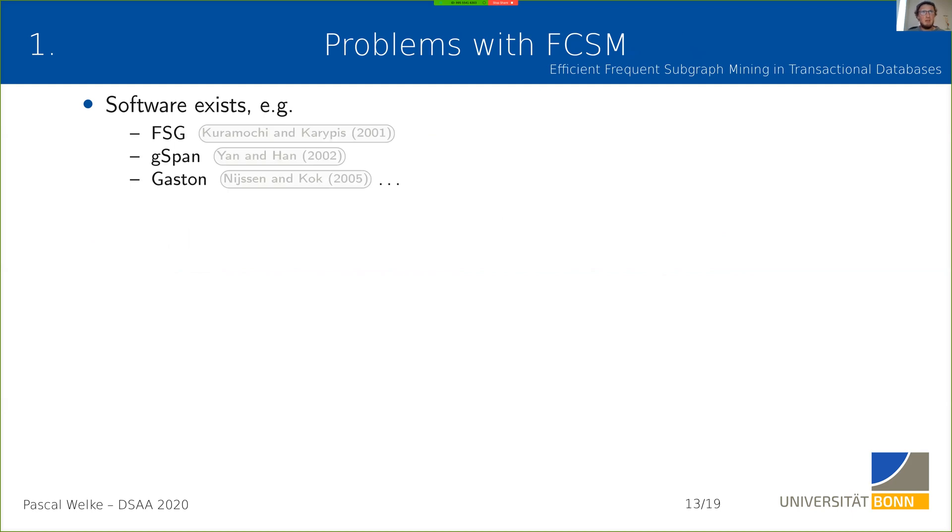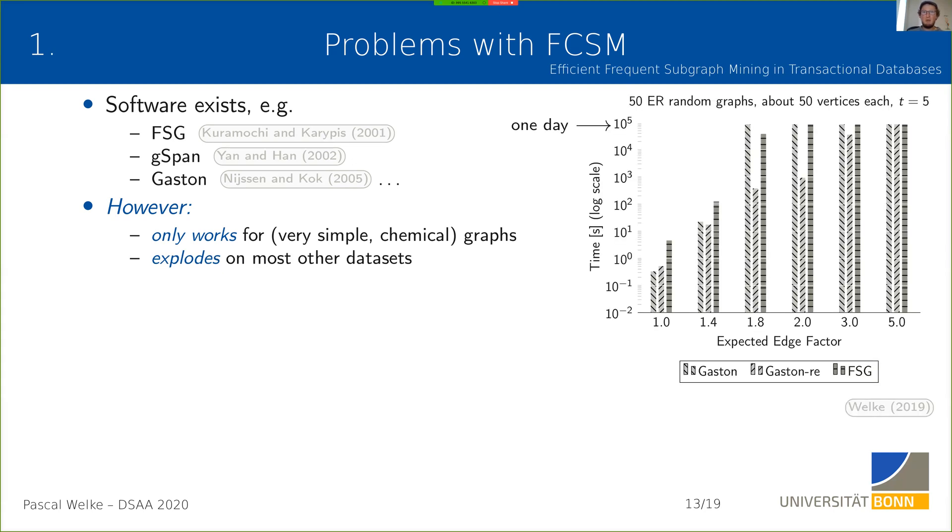Now let's go to the frequent connected subgraph mining and the exact algorithms again. There exists software to solve this problem: FSG, Gaston, and several other papers that provide implementations. But if you look into the experimental results that they show, you might notice that they typically investigate chemical graph databases. These chemical graphs only have very few additional edges on average, like three, four, five more edges than vertices on average, so I would call them very simple in a way.